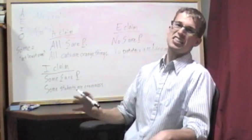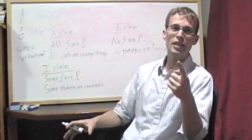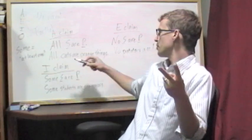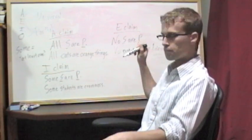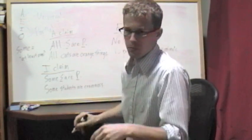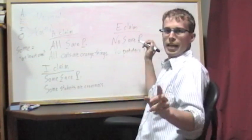All you need is a single individual that's both a student and a crammer. And then this statement, some students are crammers, will be true in categorical logic. So, let's take a look at the last kind of claim.